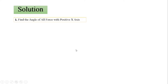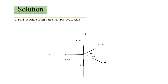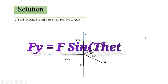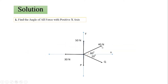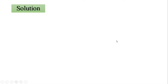Step one: find the angle of all forces with the positive x-axis. We will resolve only inclined forces — we will not resolve horizontal or vertical forces. Here, the 40 N force and the Q force are the only inclined forces. The angle of 40 N with the x-axis is already given as 60°, and the angle of Q with the x-axis is 20°. This is very important — once angles are measured from the x-axis, we can directly write Fx = F cosθ and Fy = F sinθ.